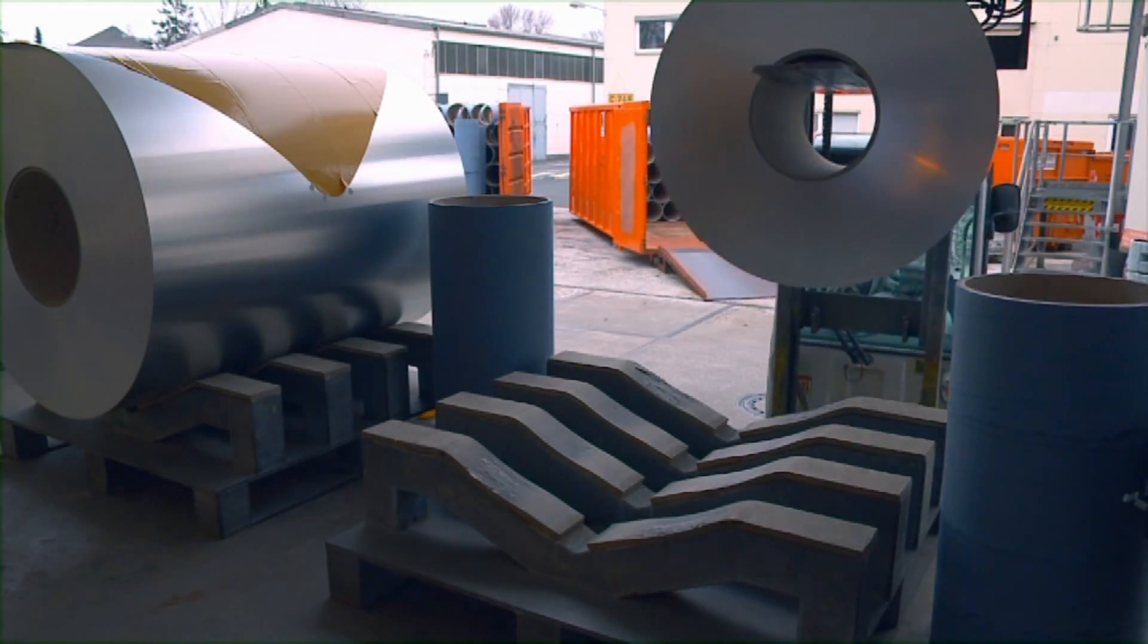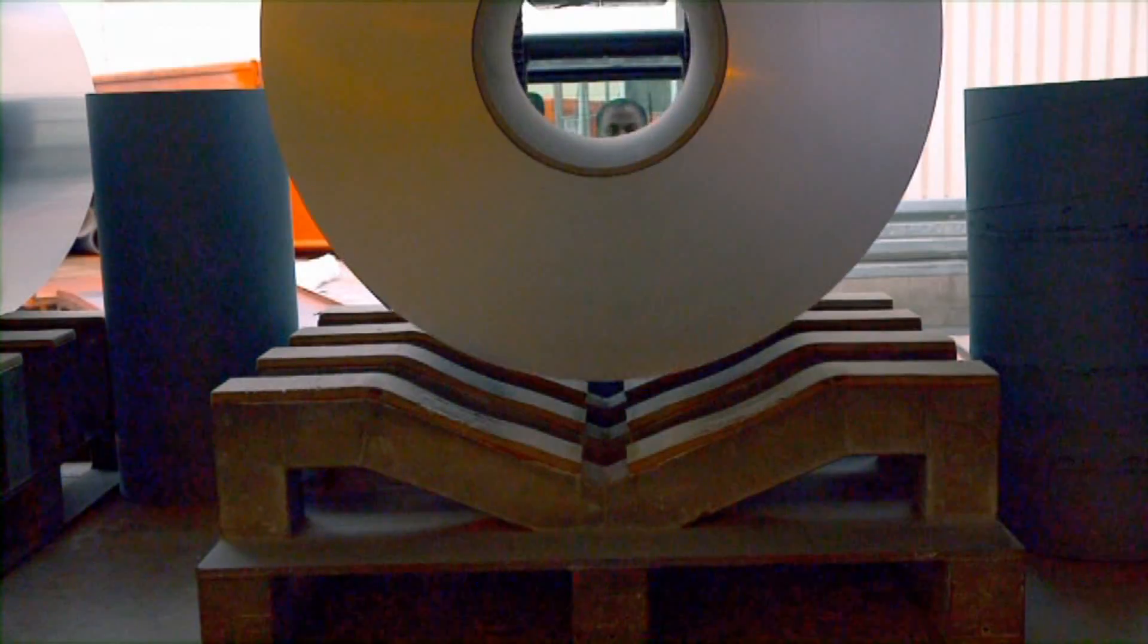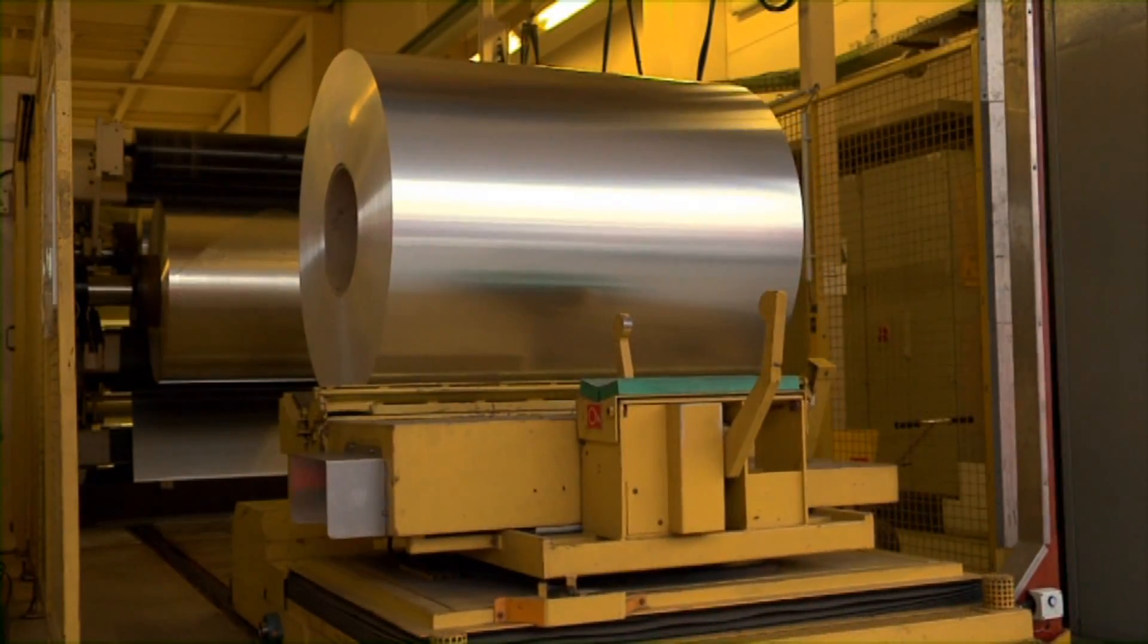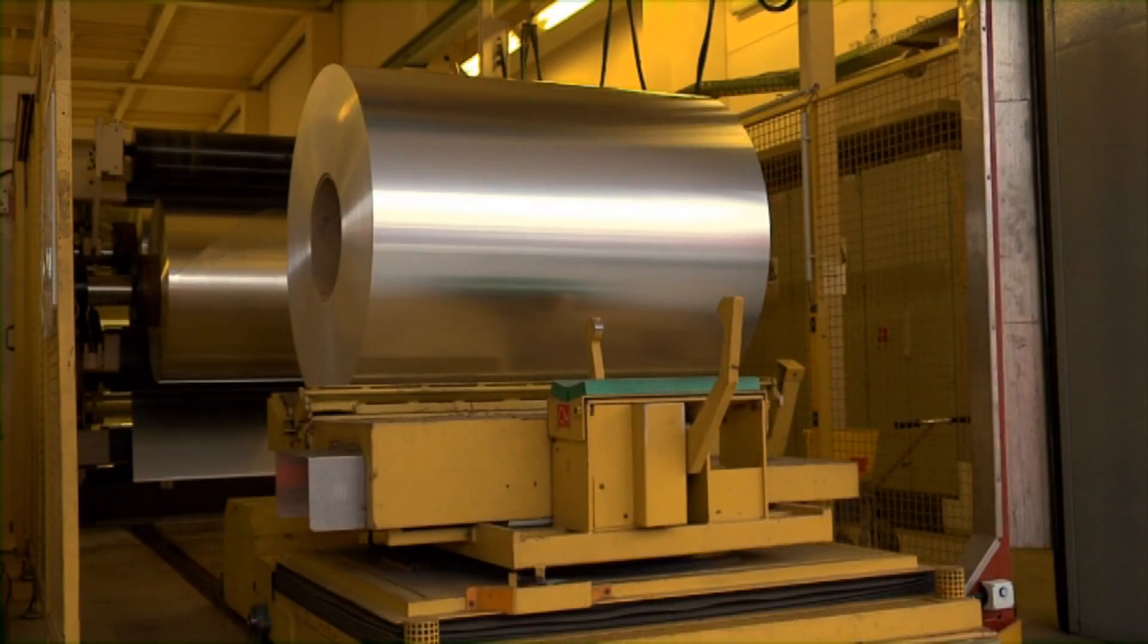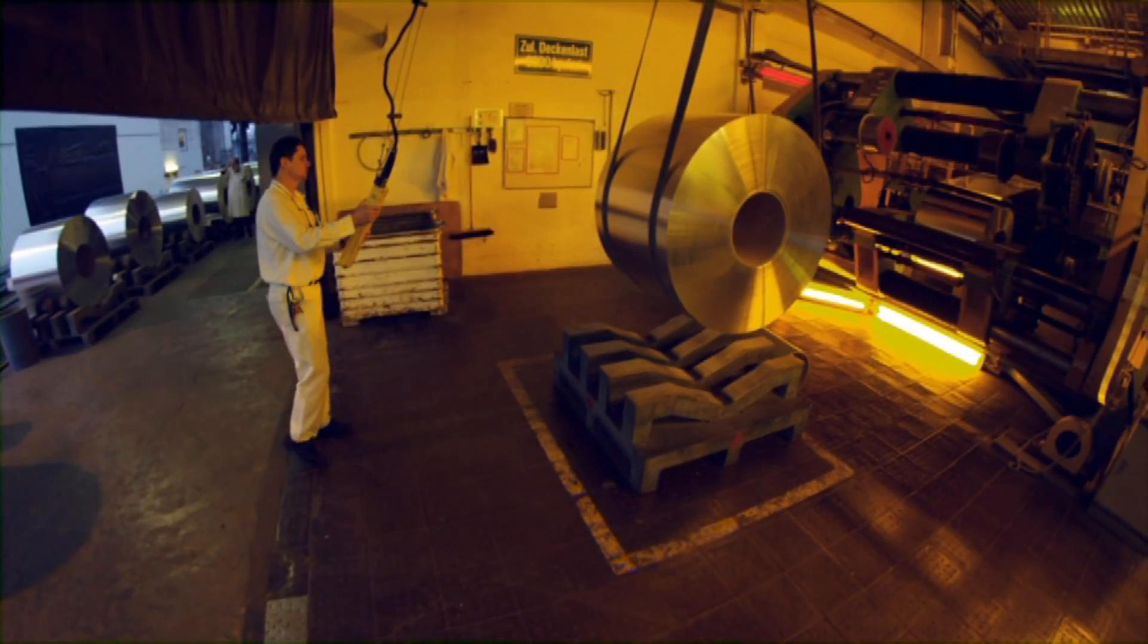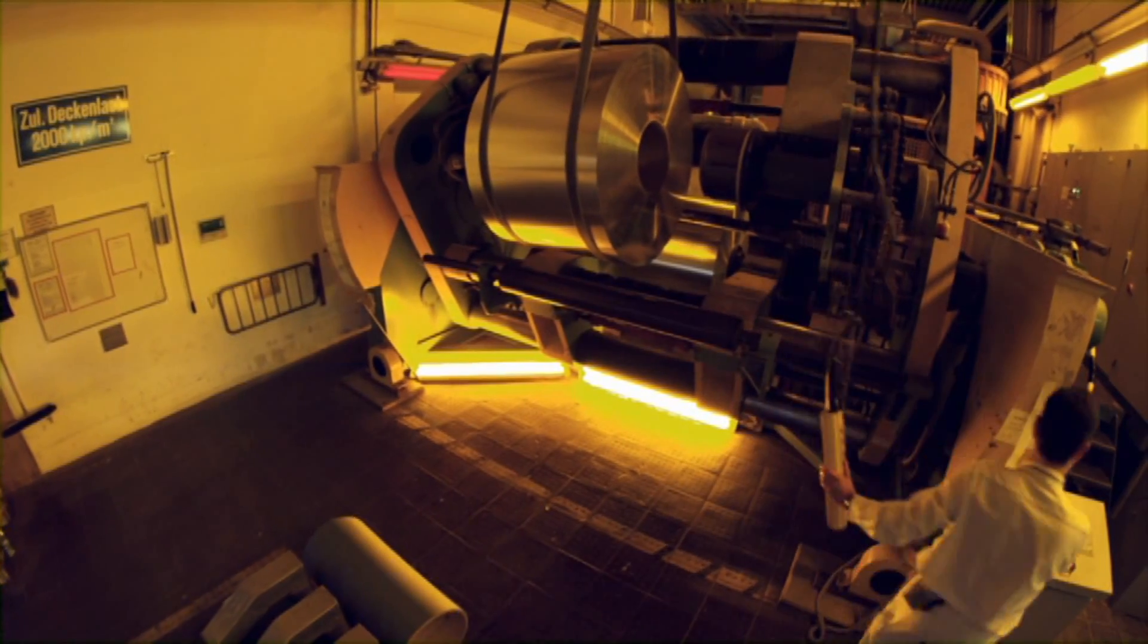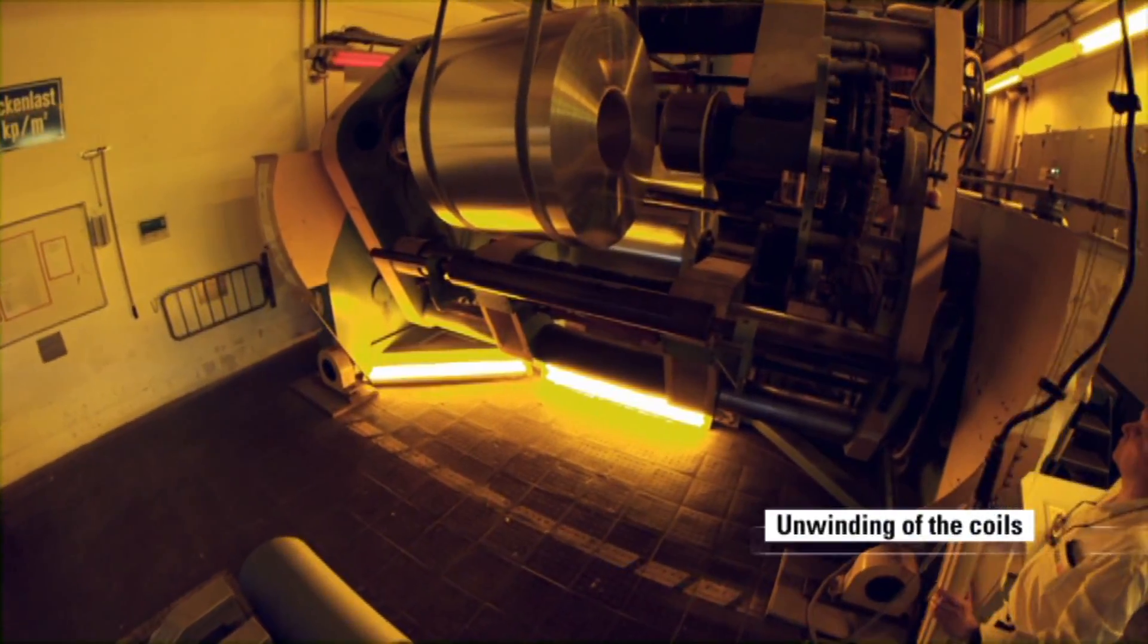This stage of the production process is where an aluminum coil is finally transformed into an offset printing plate. Plates are manufactured in a continuous process with all intermediate steps in line which is why a complete plate production line is over 200 meters long.